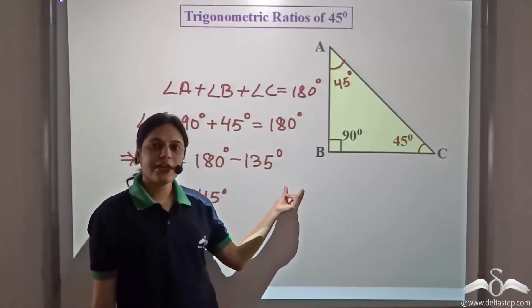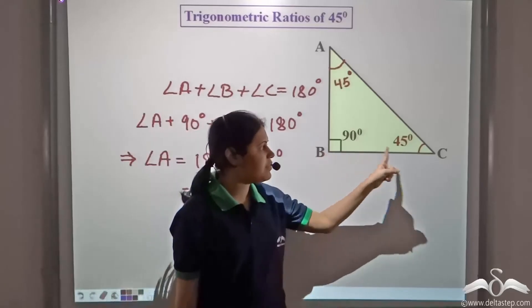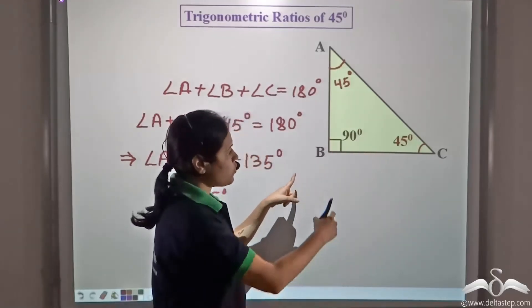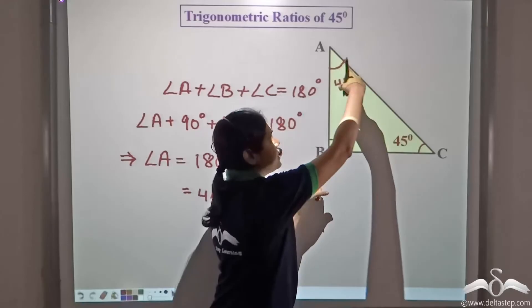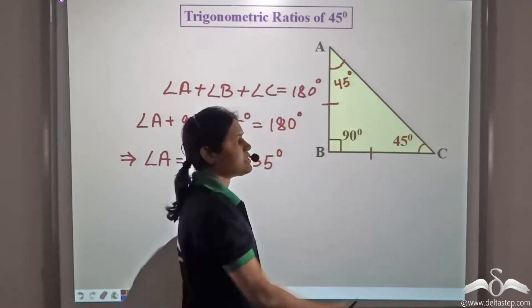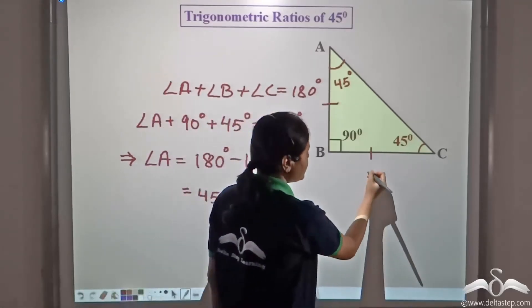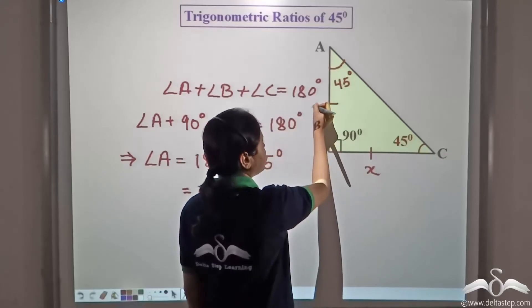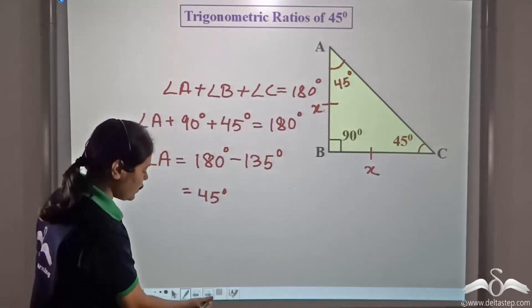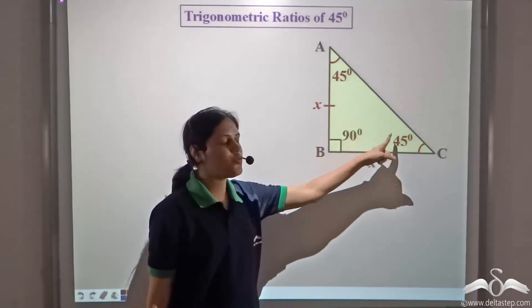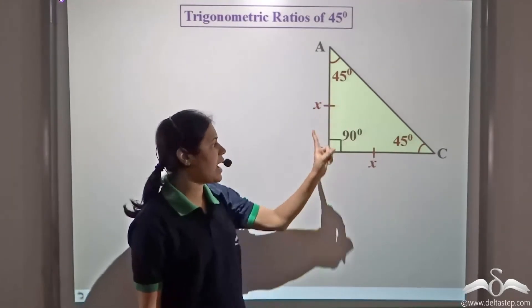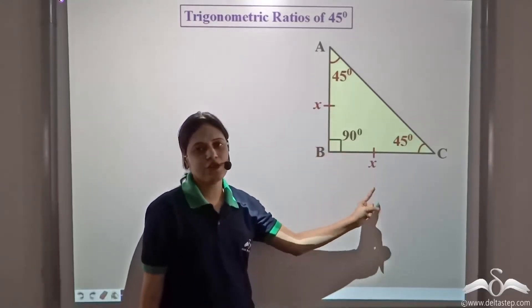In a triangle, if the angles are equal, the sides are equal. Since angle C equals angle A, the side opposite C equals the side opposite A. So if one side is X, the other will also be X. We have a triangle in which both angles are 45 degrees and we have assumed BC and AB each to be equal to X.